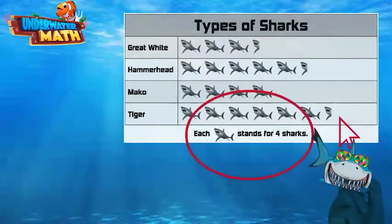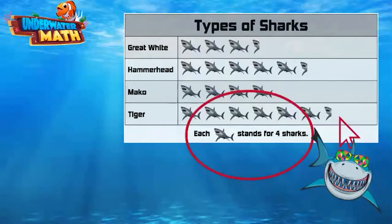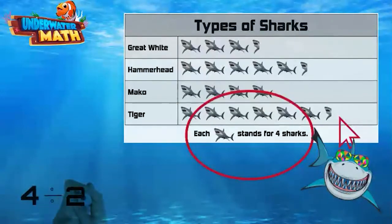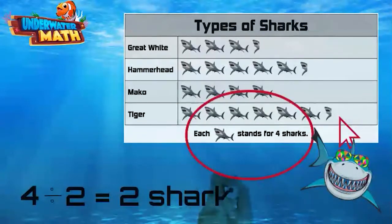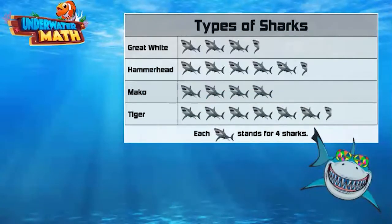I see some half sharks there — I could make some half people if we're going to play this game! No, my shark friend, you've got it all wrong. Since each whole shark represents four sharks, each half shark represents half of four, which is two sharks. Then I guess I won't eat you. I appreciate that!